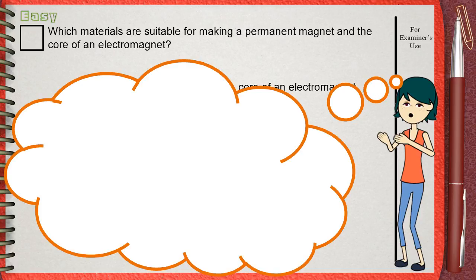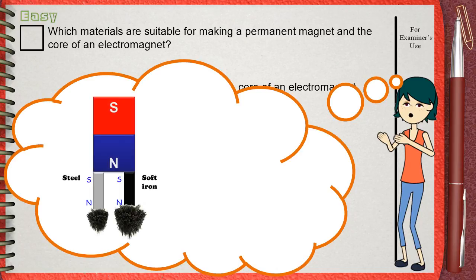When you make a permanent magnet, you need a substance that keeps its magnetic property for a long time. So you must remember the magnetic properties of soft iron and steel.